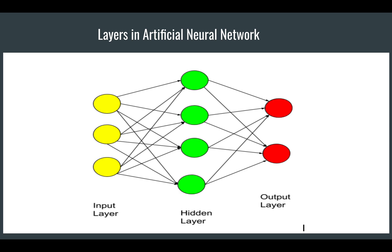Now the output layer also consists of neurons. The number of neurons in the output layer depends on how many classes you have. For example, if you want to classify between a cat and a dog, you will have two neurons — one for cat and one for dog. Whichever neuron fires gives the output. If you feed a cat image, the cat neuron fires; if you feed a dog image, the dog neuron fires.